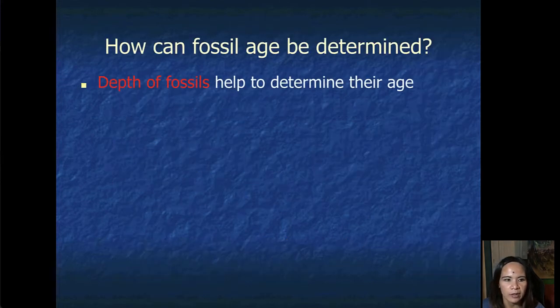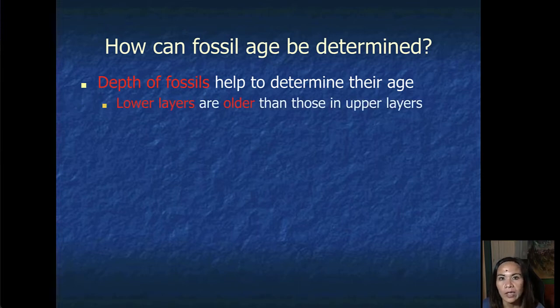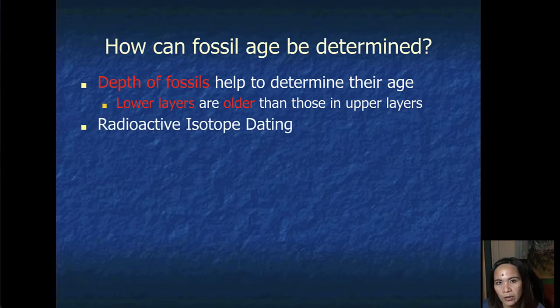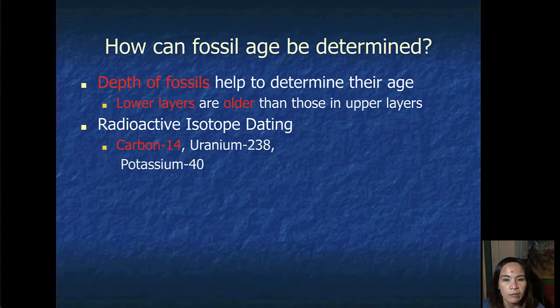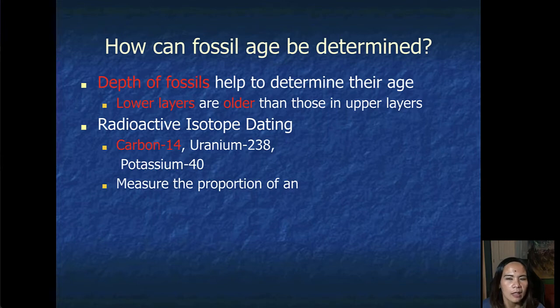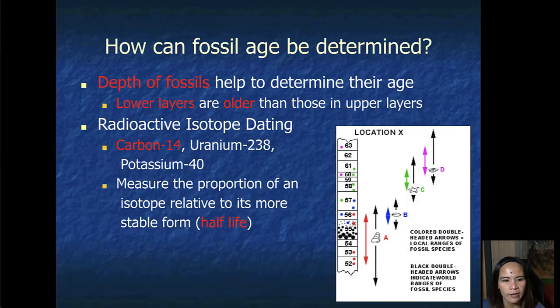How can fossil age be determined? The depth of fossils can help determine their age, of course. The lower layers are usually older than those that are in upper layers. And also, another technique is your radioisotope dating, which uses carbon-14 and uranium-238, potassium-40. This measures the proportion of an isotope relative to its more stable form, which we call it half-life. So that's another way of determining the age of the fossil.